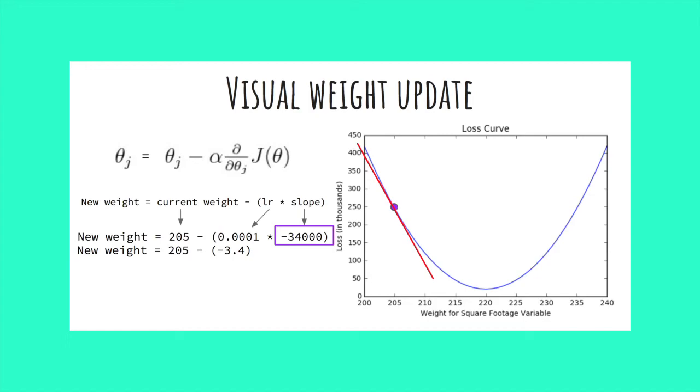When we are far away from the minima, our slope is very steep. In this example, our slope is negative 34,000. After multiplying by our learning rate, this led to an update in our weight, which was an increase by 3.4.